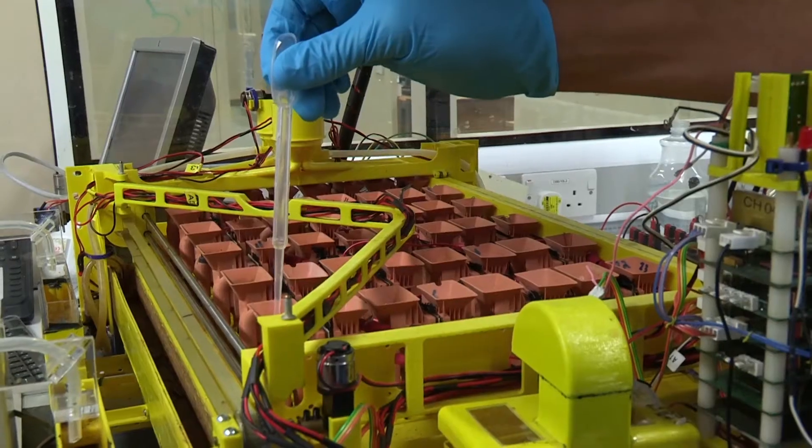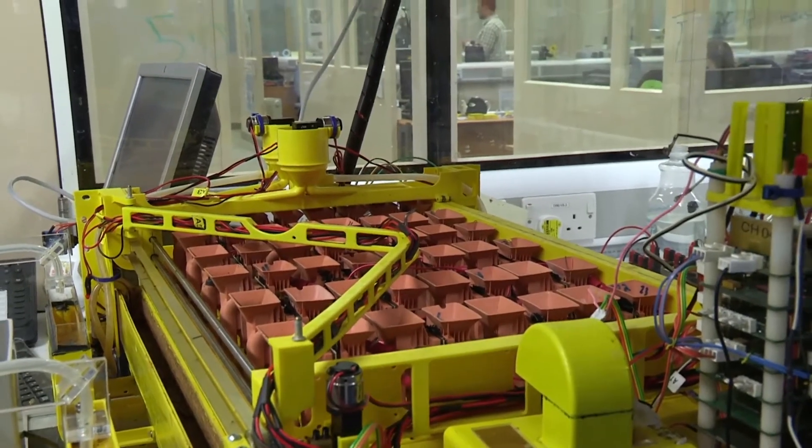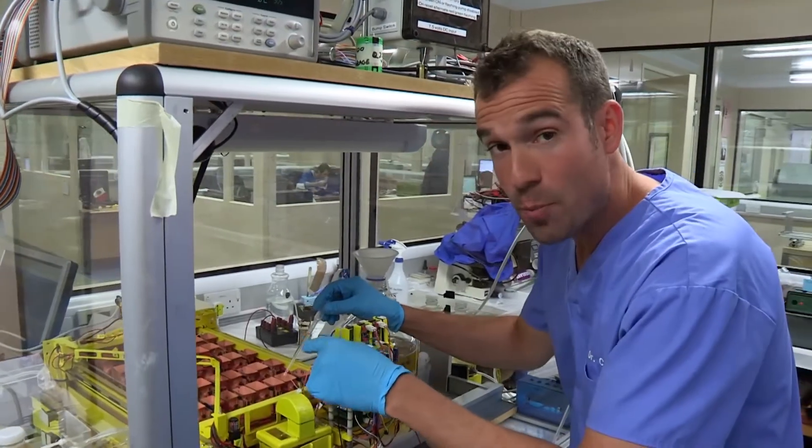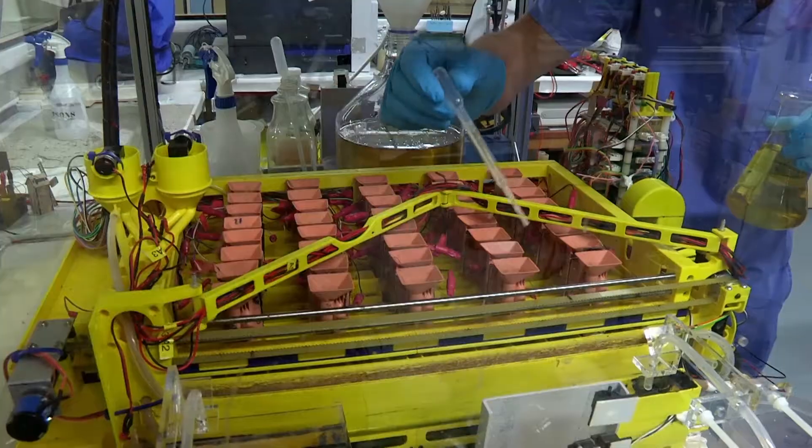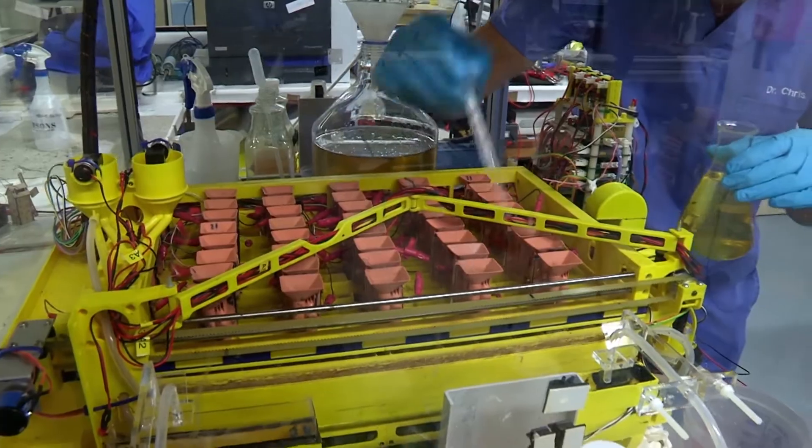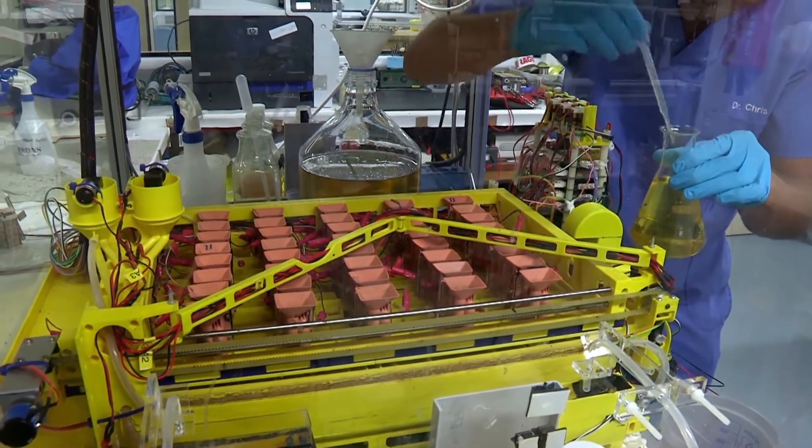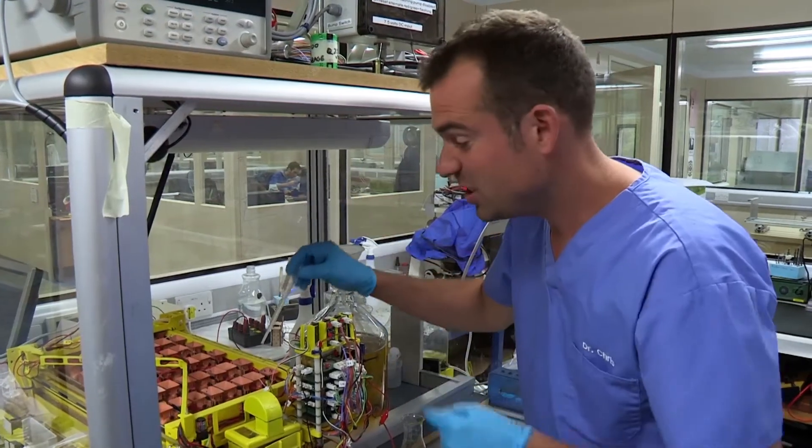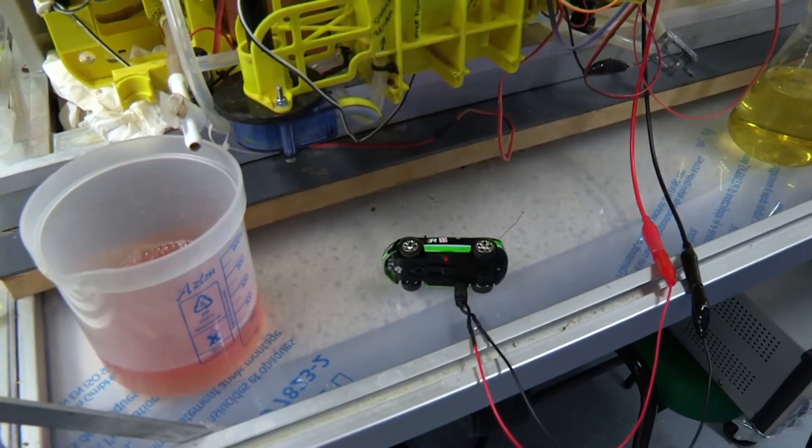To get the car moving, we first need to top up the battery. So, each one of these things that I'm putting the urine into is a microbial fuel cell. And there are bacteria in there that are going to eat the sugars and proteins in the urine and turn them into electricity, which is then going to charge this car.